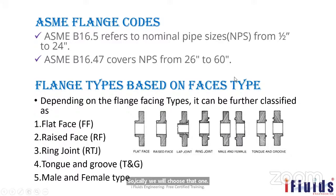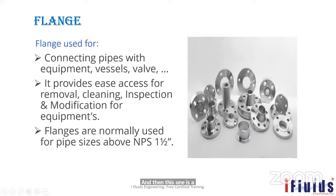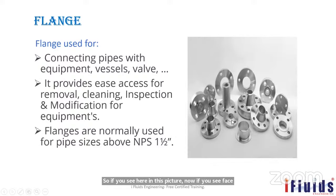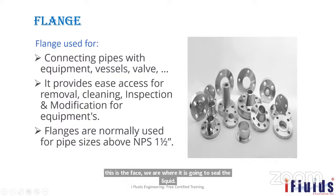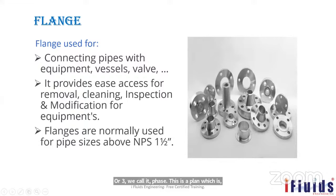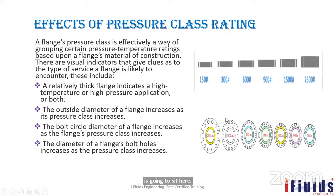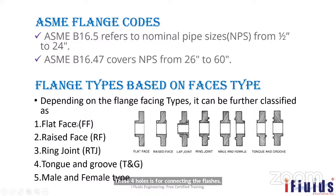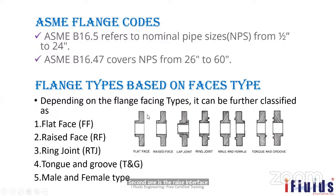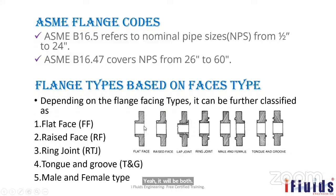Flanges are also classified by their face type — the face being the sealing surface where the gasket sits. The first type is flat face, where the sealing surface is flat with no projection. Flat face is used for lower pressure and temperature applications, such as cooling water, raw water, drinking water, and utility air — typically around 6 to 7 bar.